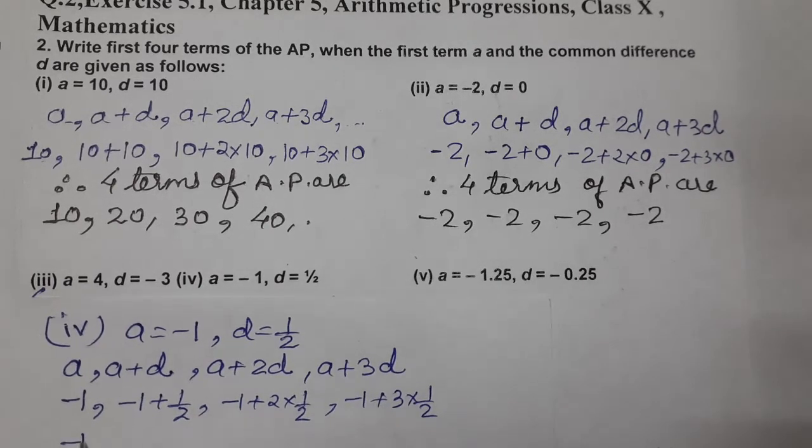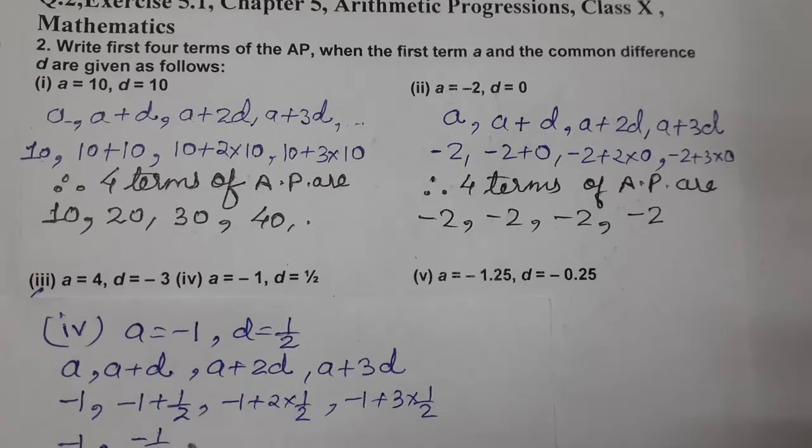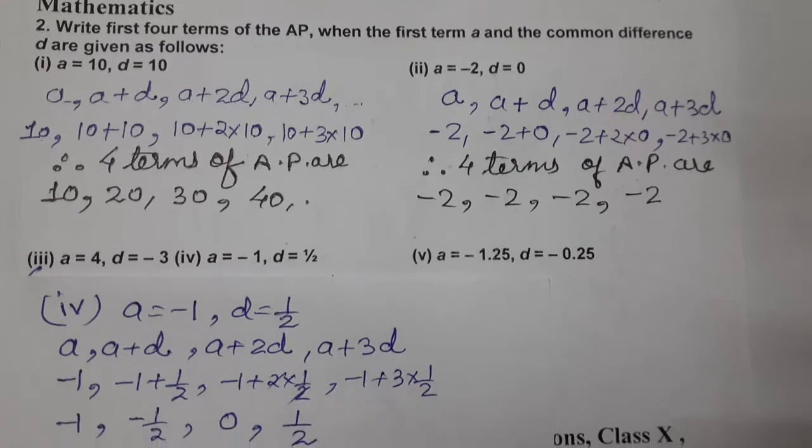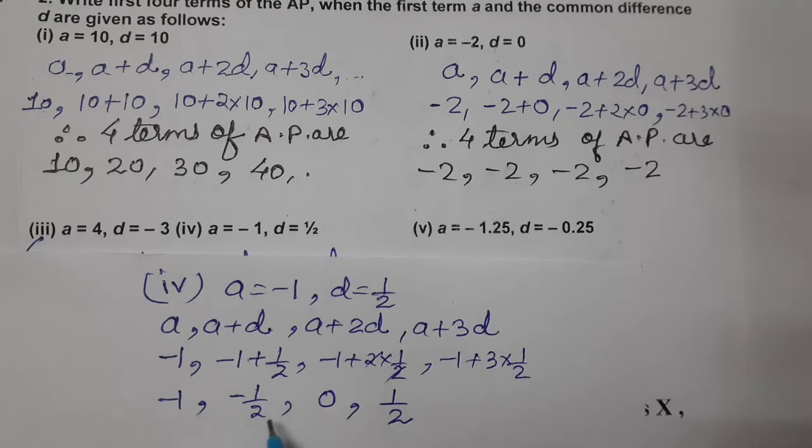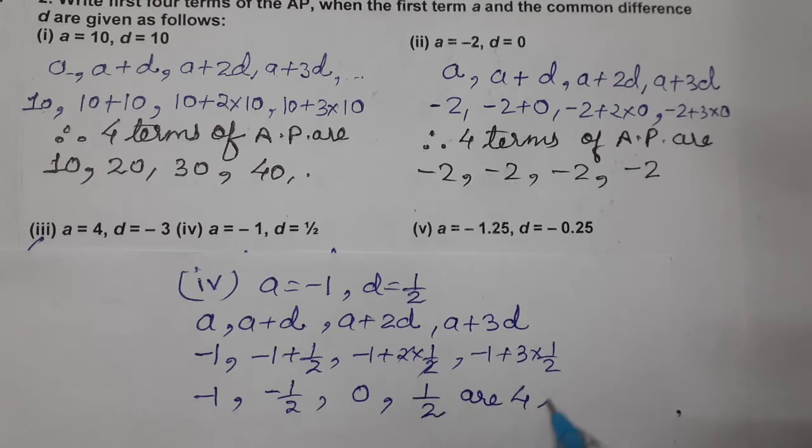So, hume kya mil raha hai? Minus 1. Minus 1 plus half, kitna ho gya? Minus half. To say, to cancel, minus 1 plus 1, zero ho gya. And this is 3 by 2. So, kitna aayega? Plus 1 by 2. 3 by 2, 3 by 2 mein se minus 1 gaye, 1 by 2. So, ab hume aa gya yeh answers. So, kya answers aage hamare paas? Minus 1, minus half, zero and 1 by 2. So, these are the four terms of AP.